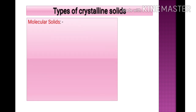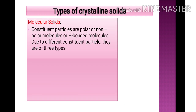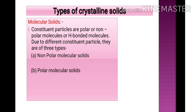Types of crystalline solids. First is molecular solids, where constituent particles are polar, non-polar, or hydrogen-bonded molecules. Due to different types of constituent particles, they are of three types: non-polar molecular solids, polar molecular solids, and hydrogen-bonded molecular solids.